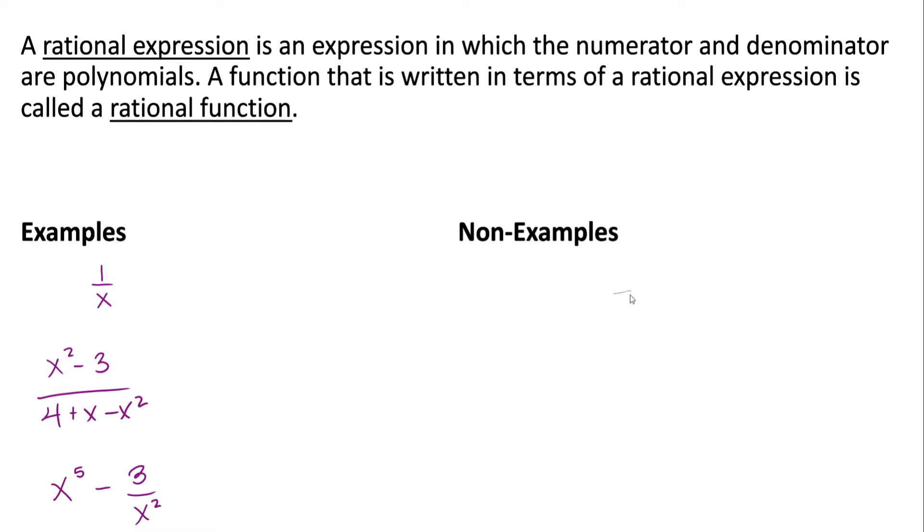Some non-examples of rational expressions, or things that aren't rational expressions, are generally things that include radicals, so something like 1 over radical x, or something like radical x over 3 plus x. Even though these are both fractions and we might think they're rational expressions, they're not because radical x is not a polynomial.